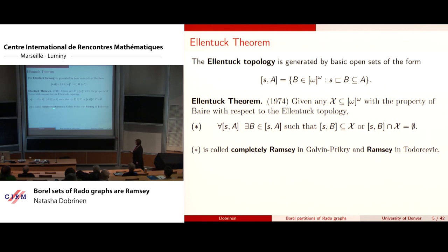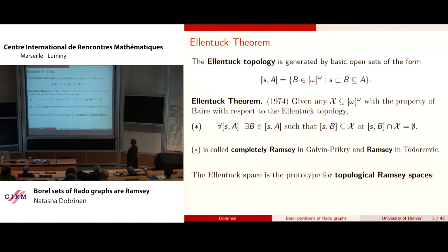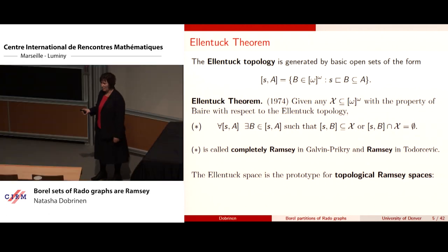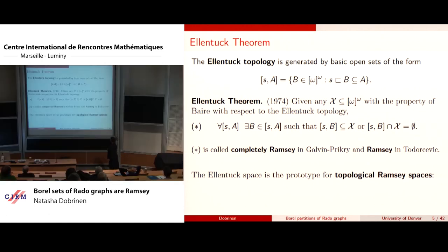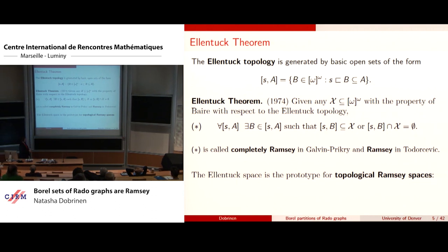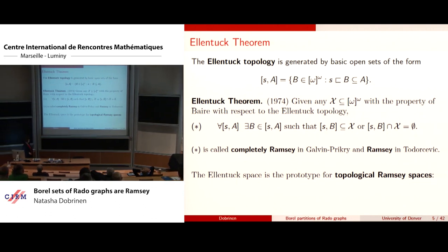In the terminology of the Galvin-Prikry paper, star is called 'completely Ramsey,' and in Todorčević's book it's called 'Ramsey.' The Ellentuck space is the prototype for something called a topological Ramsey space — terminology coined first in Carlson-Simpson and then extended vastly in Todorčević's book.